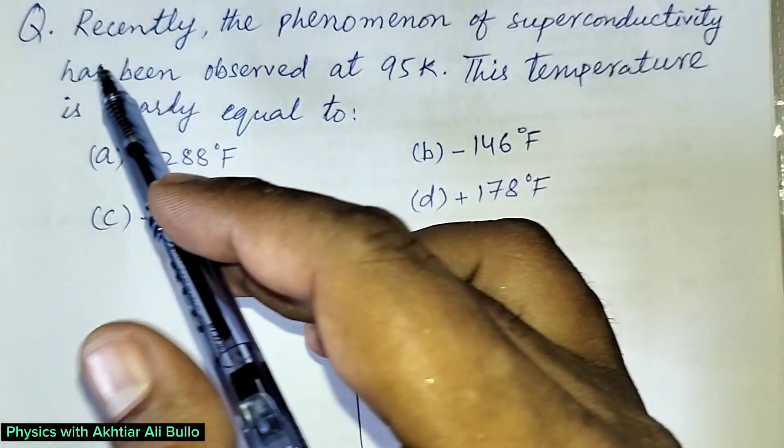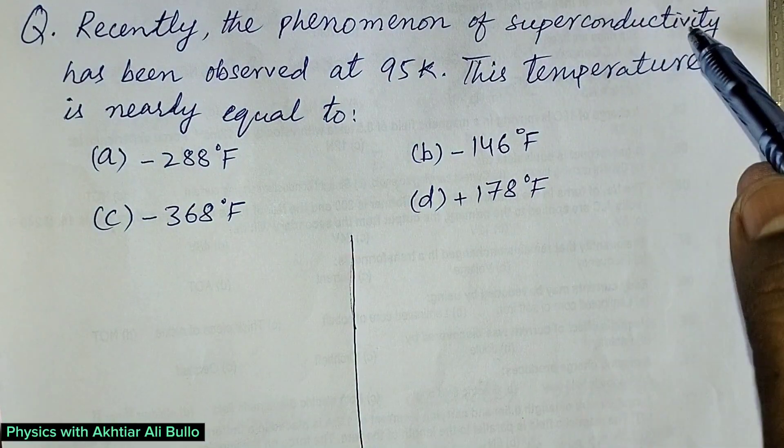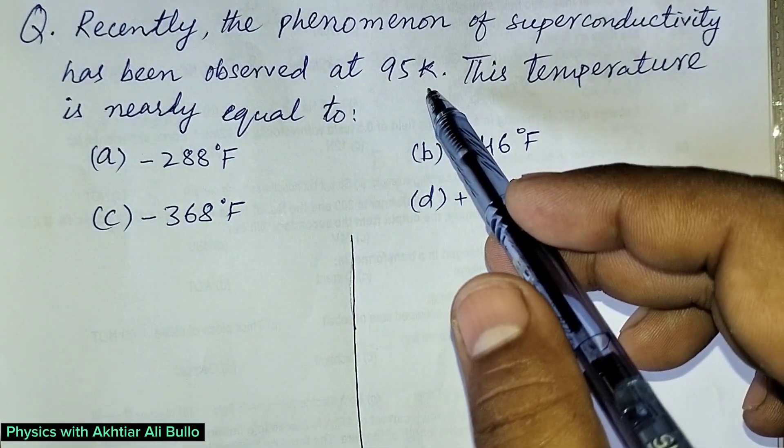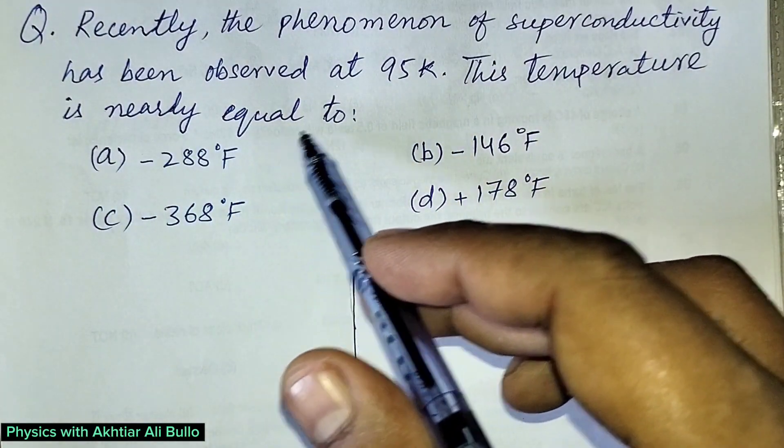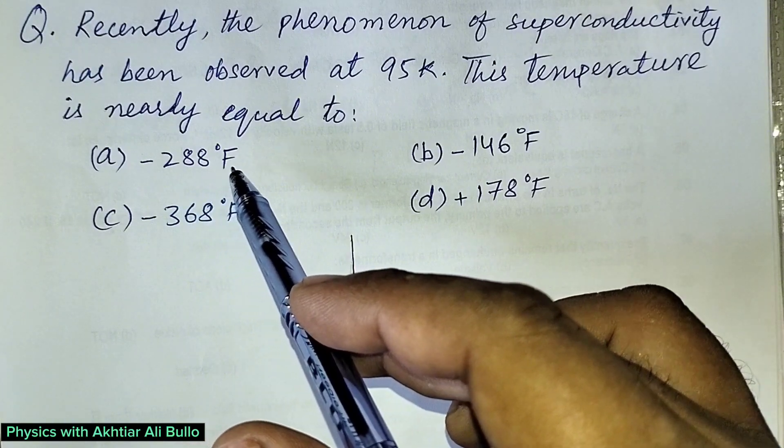The question is: recently, the phenomenon of superconductivity has been observed at 95 Kelvin. This temperature is nearly equal to (a) -288°F,